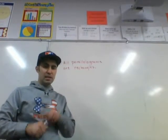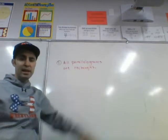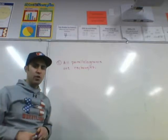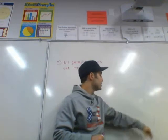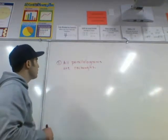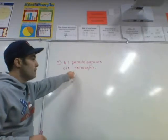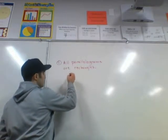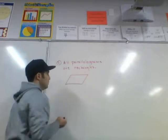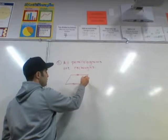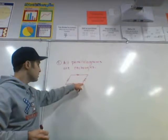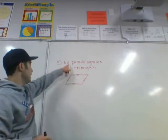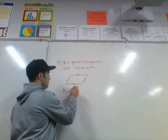Let's apply the scientific method. We have a statement: all parallelograms are rectangles. We're going to try to prove this false by finding a parallelogram that is not a rectangle. Here's a parallelogram — it has two sets of parallel sides — but it does not have four right angles, so it is not a rectangle. Therefore, the statement 'all parallelograms are rectangles' is not true.